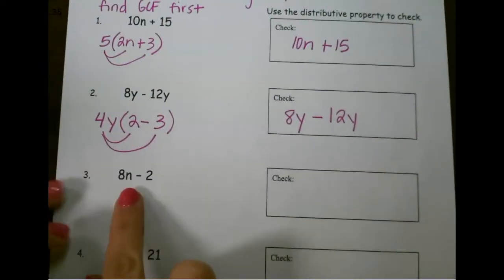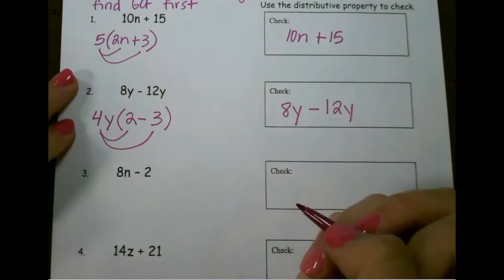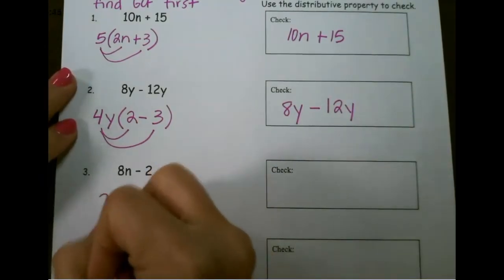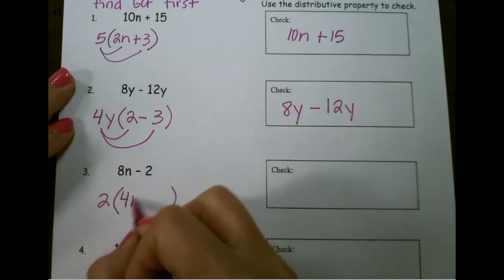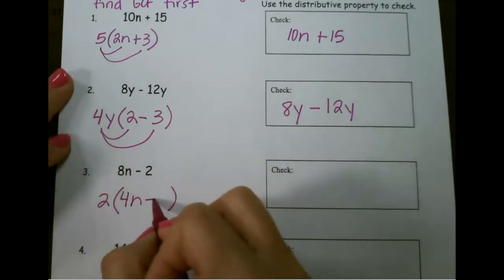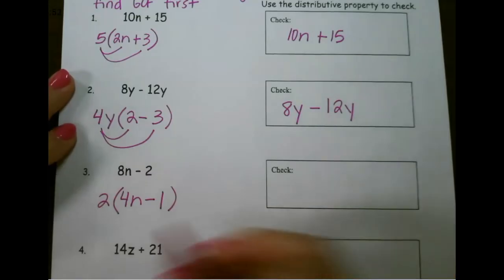Go ahead and try this next one to see if you can solve that one on your own. The greatest common factor of these two would be 2. So 2 times 4n would give me 8n, and 2 times 1 would give me 2.